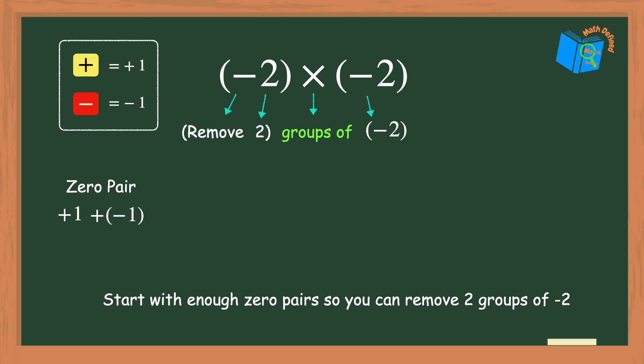To make zero pairs using counters we'll replace the positive 1 with a yellow counter and the negative 1 with a red counter. Going back to our problem here and ignoring the negative signs for just a moment, I see that I need a set of zero pairs to represent two groups of 2. So here is my first group of 2 and now my second group of 2.